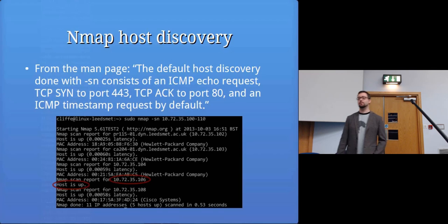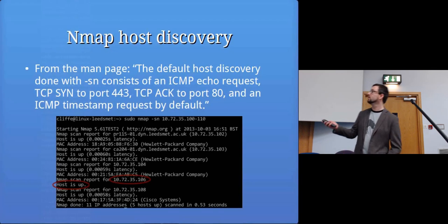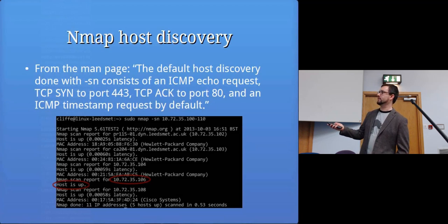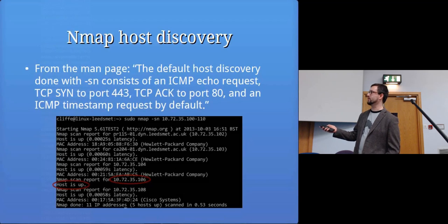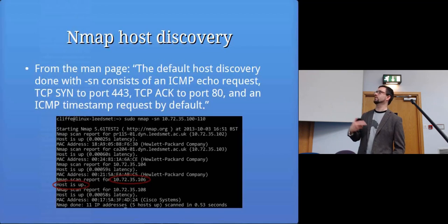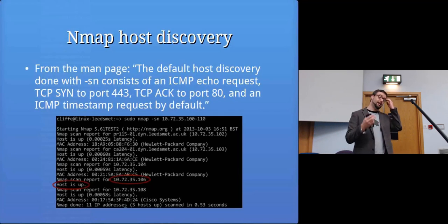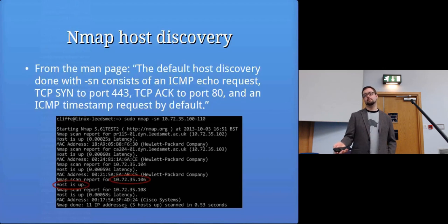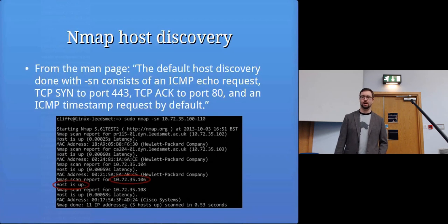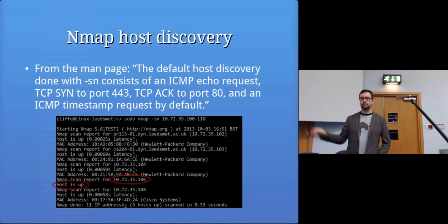Nmap's host discovery also tries other tricks: TCP SYN to port 443, TCP ACK to port 80, and a timestamp request. It does this because some people set up their firewalls to disable ping responses. Blocking ping doesn't provide much extra security and makes troubleshooting harder, but it does make it slightly harder for an attacker to discover a system. By using these multiple techniques, you're more likely to find the host.